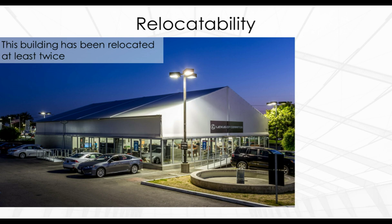While engineered buildings are generally designed as permanent, there are occasions when a building needs to be relocated when a lease ends or business needs change. Relocating a steel building is difficult and expensive, typically requiring new metal panels. Relocating a fabric building is different: fabric panels are slid out of the Keter track, rolled and shipped, then reapplied to the frame without fasteners or leaks.